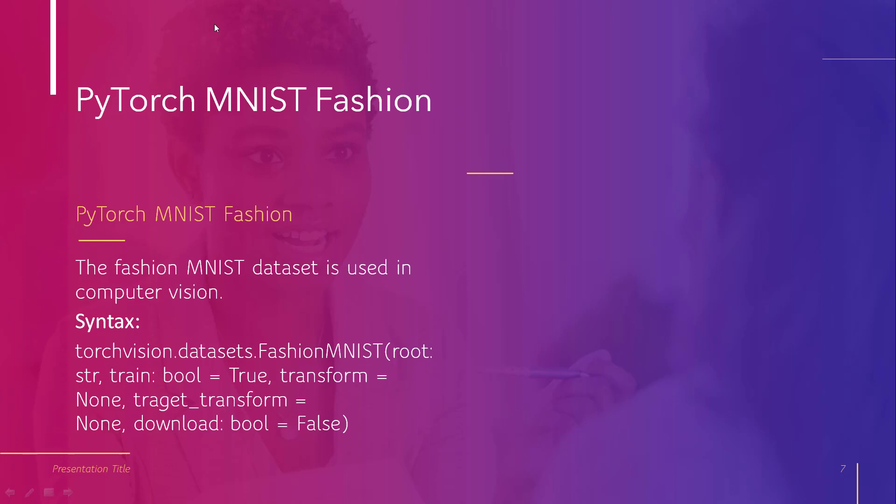The next parameter is transform, which takes in a PIL image and returns a transformed version. The next parameter is target_transform, which takes in the target and transforms it. The next parameter is download, whose default value is boolean — if true it downloads the dataset and puts it in the root directory; if false it does not download the dataset.